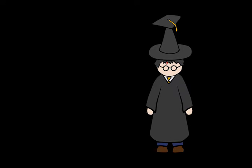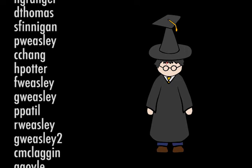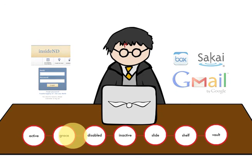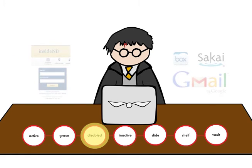After several years, Harry graduates. The registrar identifies which students are graduating, kicking off another IAM process that sets an account expiration date. His account moves from active to grace, where he has a set amount of time before his account becomes disabled. Disabling an account means the user no longer has access to the account, but all of their resources are intact.